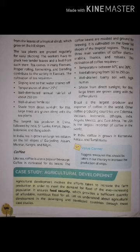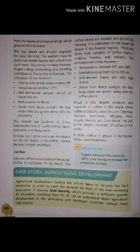The cultivation of tea requires sloping land so that water drains off, temperatures of about 25 degrees Celsius, well-distributed annual rainfall of about 350 centimeters, well-drained fertile soil, and shade from direct sunlight — for this, large trees are grown alongside tea plants. The largest tea producer is China, followed by India, Sri Lanka, Kenya, Japan, Indonesia and Bangladesh.